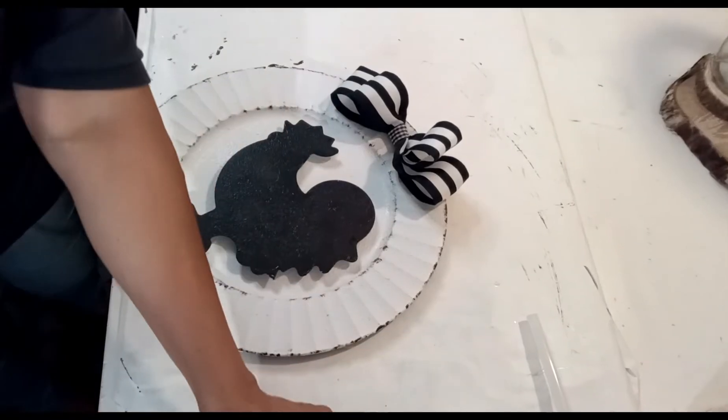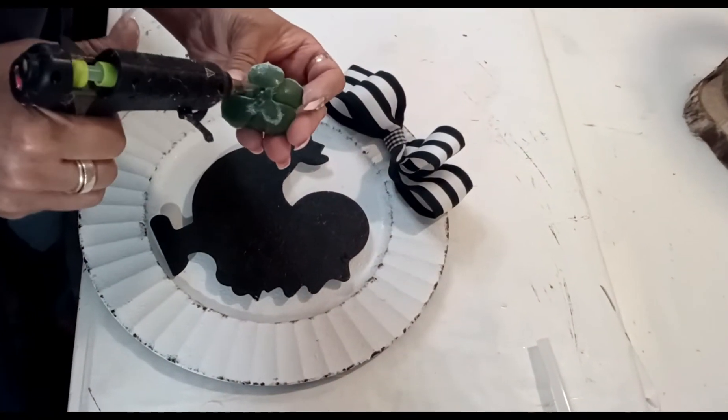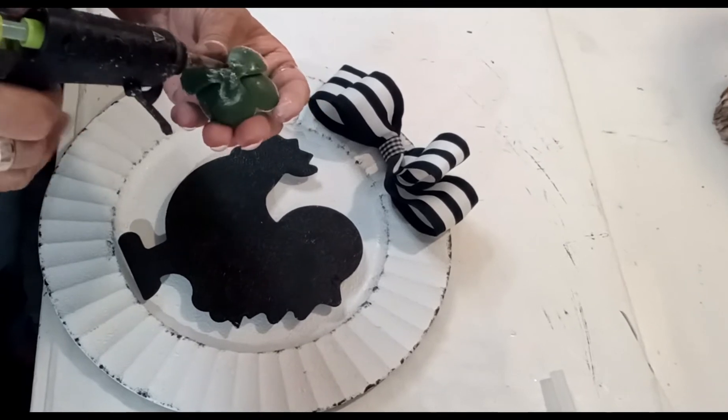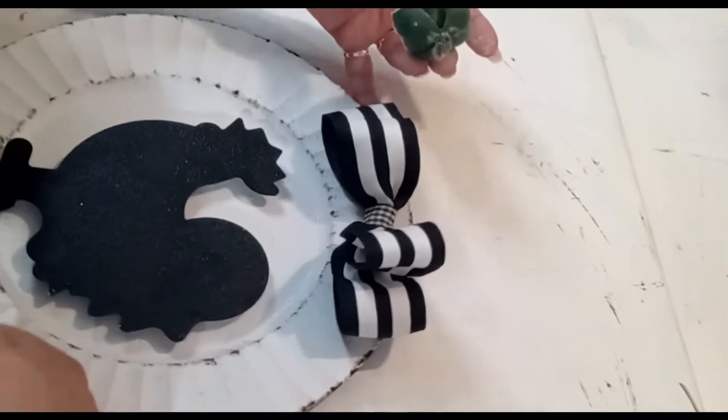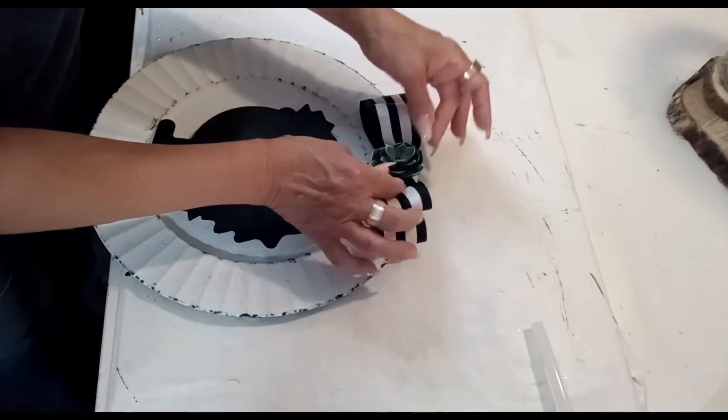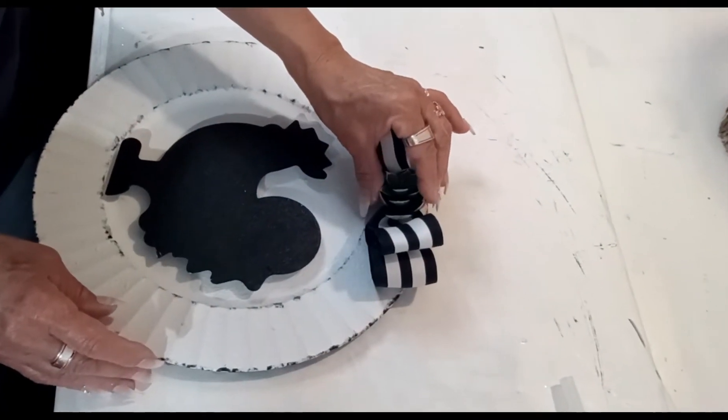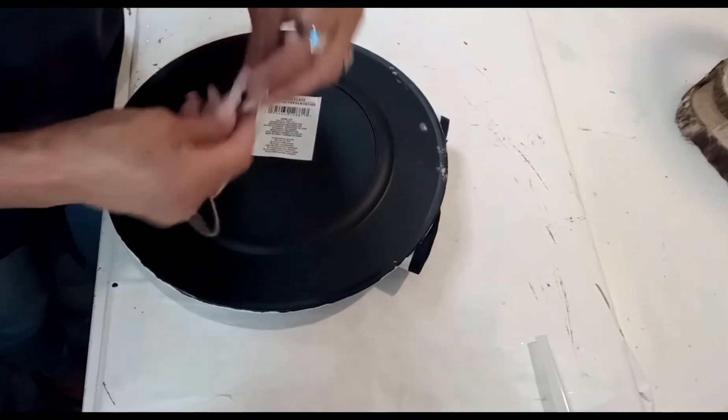I have the succulent and I distressed it. I just coated it in white. Now with some hot glue, I'm just going to put it right there. To display it on the wall, I'm using some jute twine and the black and white beads.